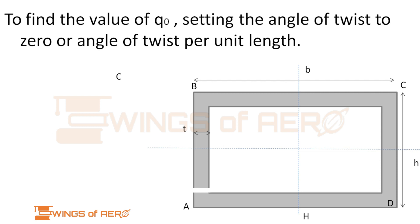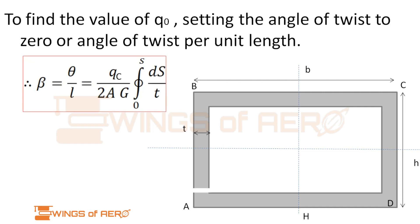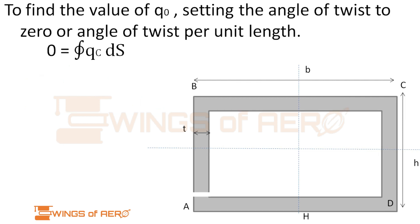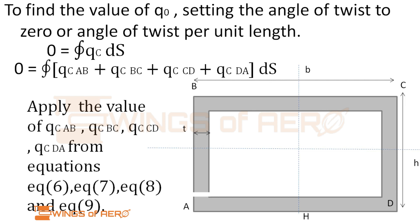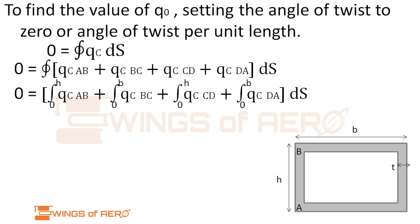To find the value of q0, we set the angle of twist to 0 — because the shear load acts at the shear center, so there is no twist. The angle of twist per unit length β = θ/L = (1/(2AG)) × closed integral of (q_closed/t)·ds = 0. Expanding over the four members AB, BC, CD, and DA with limits 0 to h for AB and CD, and 0 to B for BC and DA, then integrating.